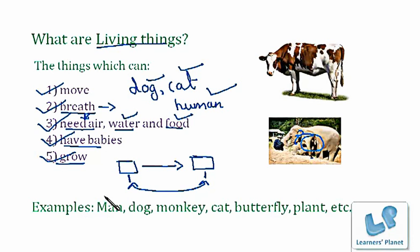Examples of living things could be man, dog, monkey, cat, and butterfly.